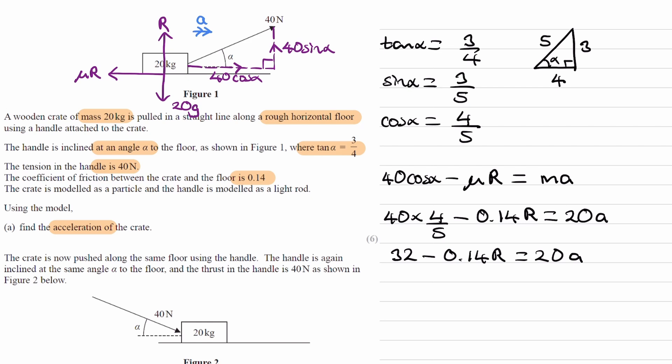So we want to work out acceleration, but in this equation, which I'll call 1, we don't have R. R is an unknown, so we're going to have to work out R using a different equation. We can consider the vertical direction. If it's accelerating horizontally, that means there is no resultant vertical force. The upward forces are R and 40 sin alpha, and they add together to equal the downward force, which is 20g.